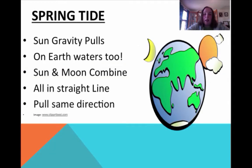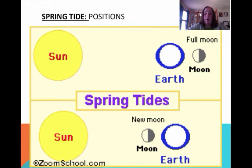So spring tide — why does this happen? This happens because the sun's gravity starts pulling on Earth's waters too. You get a combination of the sun and moon, and when they're all in a straight line, that's why you get the very high and the very low.